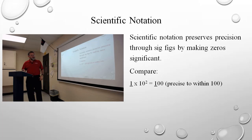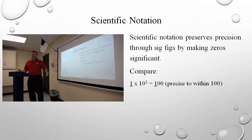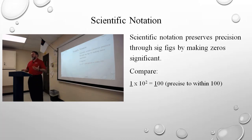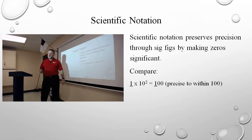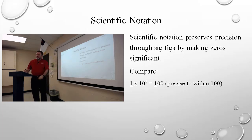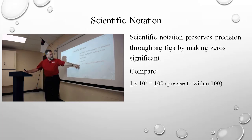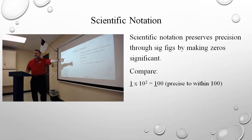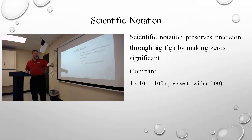Look at these different numbers. One times ten to the second. The shorthand in your mind is probably add zeros equal to the exponent of the ten, so I'm adding two zeros — that equals one hundred. But look at what's being communicated. In my number, one times ten to the second, that's equal to one hundred. The number I have, the one, is in this place in my final number. How many significant figures do I have? One. How precise am I? I'm only precise to the hundreds place.